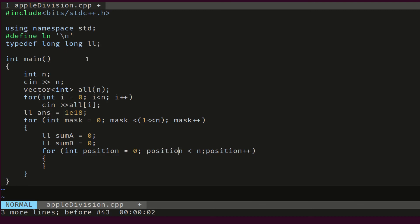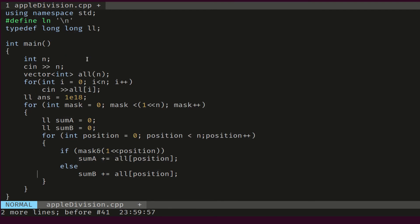Each time, we will check if the mask is on at that position - that is, mask and 1 shifted by position is different from 0. Then we're gonna increment sum A by the weight at that position. We'll do the same thing if the mask is off at that position. In that case, we will increment sum B.